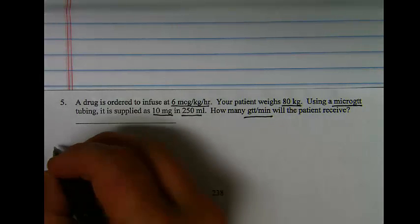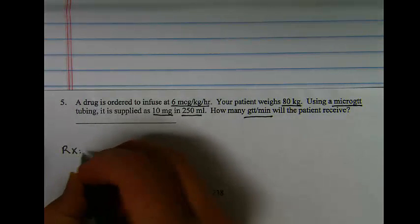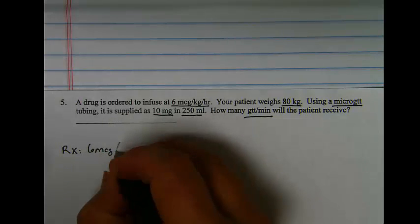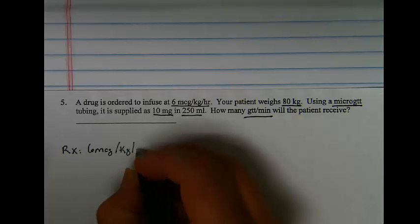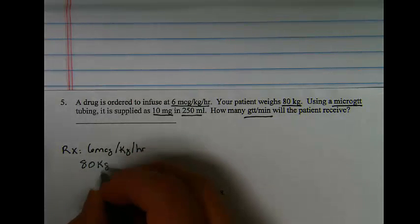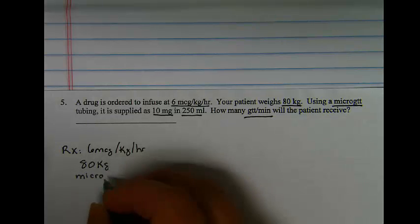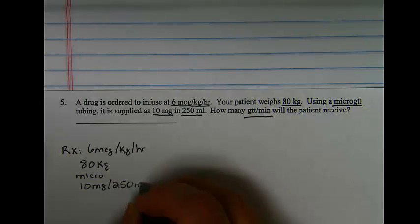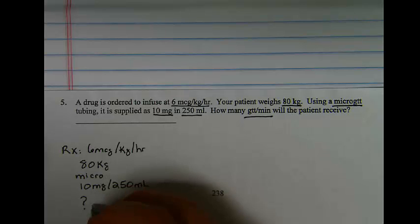So my toolbox will be my order for 6 micrograms per kilogram per hour for a patient weighing 80 kilograms, through micro drip tubing and a supply of 10 milligrams in 250 milliliters. What is the drop per minute flow rate?